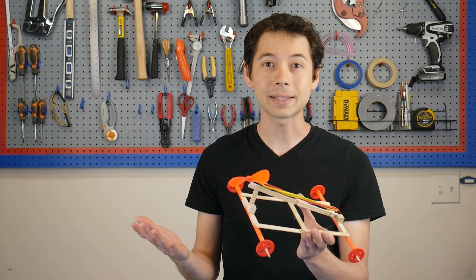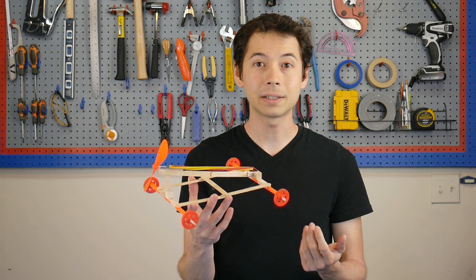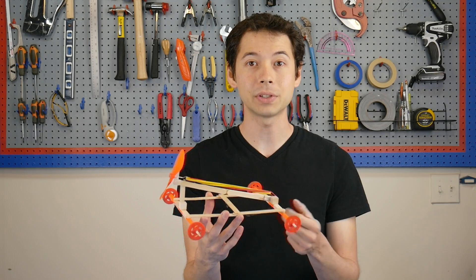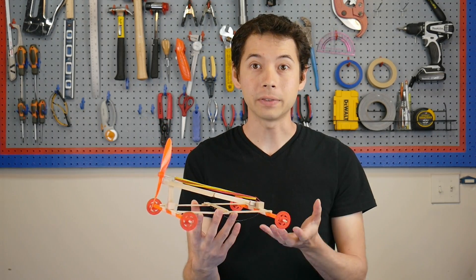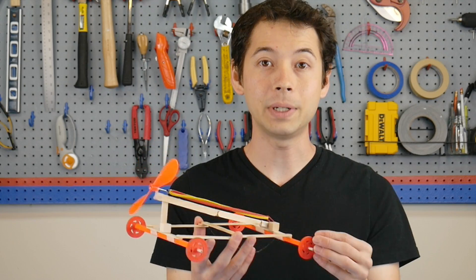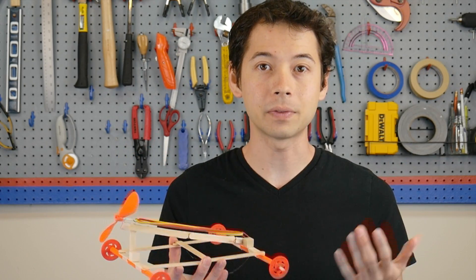But what is making it go so fast and so far? In this particular design, there are two main variables. The first are the wheels and the overall weight of the car. These lightweight plastic wheels will work best because of inertia.